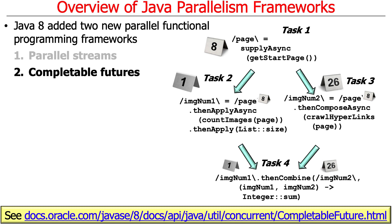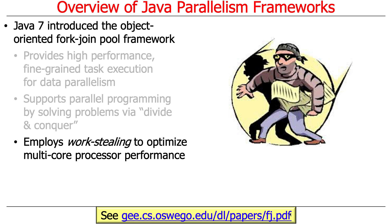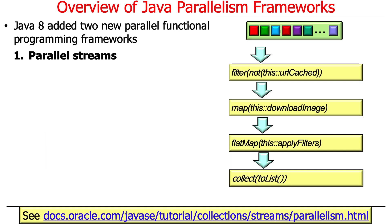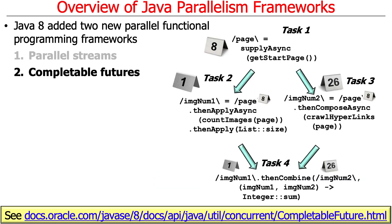The second new parallel functional programming framework available with Java 8 and beyond is called completable futures. The fork-join pool is object-oriented and requires low-level work — forking, joining, overriding methods. Parallel streams is a synchronous programming model that maps nicely onto multiple cores. Completable futures is a completely different programming model altogether — it uses asynchronous reactive programming, which has become popular with things like the reactive programming manifesto and languages like JavaScript.